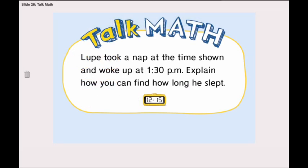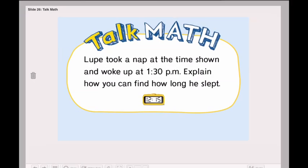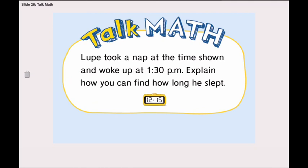Now, let me ask you a question. Loop took a nap at the time shown. Look at the time shown. Loop took a nap at the time shown and woke up at 1:30 PM, or 30 minutes past 1. Explain how you can find how long he slept. I want you to send me the answer on ClassDojo. Now, go solve your independent practice on the next page. And don't forget, your homework is also on Kahoot, and you will find the link in the weekly plan. Thank you.